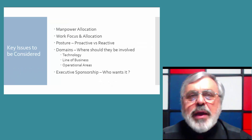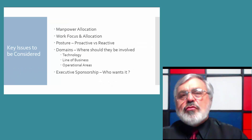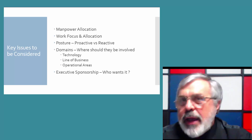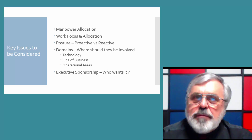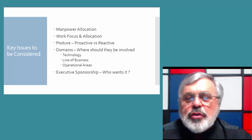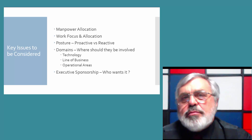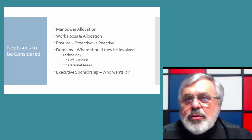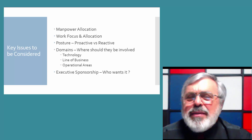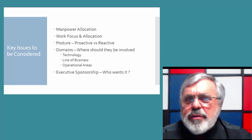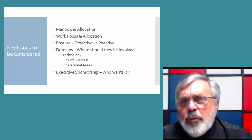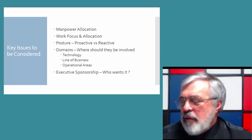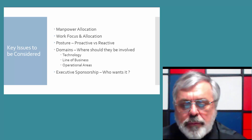First, manpower allocation — how big should the group be. Second, the work focus and how their work should be allocated to different functions. Third, the posture — do you want a revenue assurance team that's mostly proactive or reactive. Fourth, the domains, including the technology domains, line of business domains, and the operational areas they will work with. And finally, the key question of executive sponsorship — who wants to be responsible for this function.